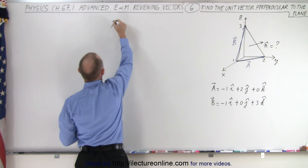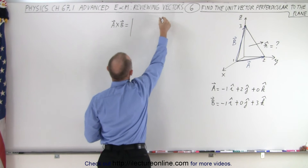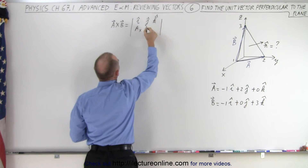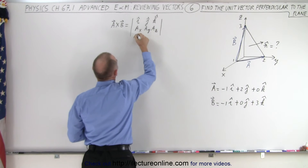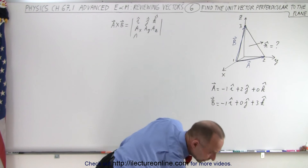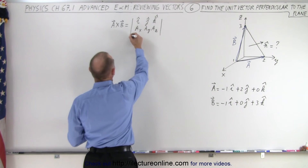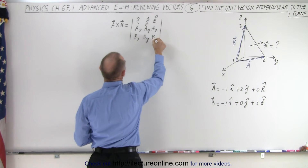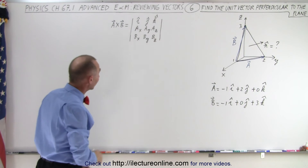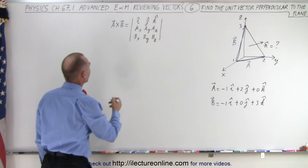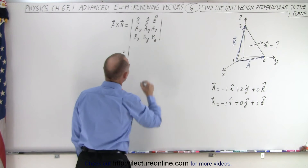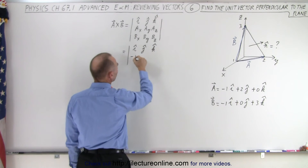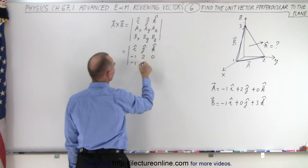Let's do A cross B. That is equal to, by definition, the i, j, k row, the x, y, and z components of the A vector, and the x, y, and z components of the B vector. So this is equal to: i, j, k, and the A components are minus 1, 2, and 0. The B components are minus 1, 0, and 3.